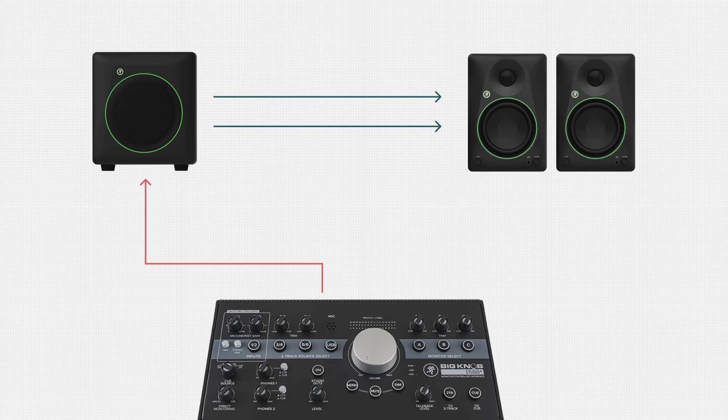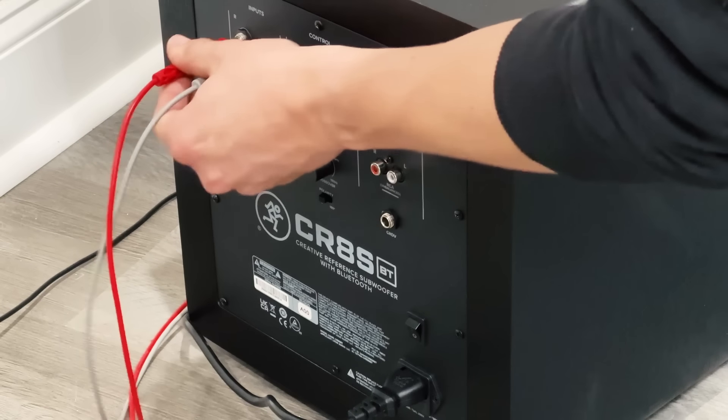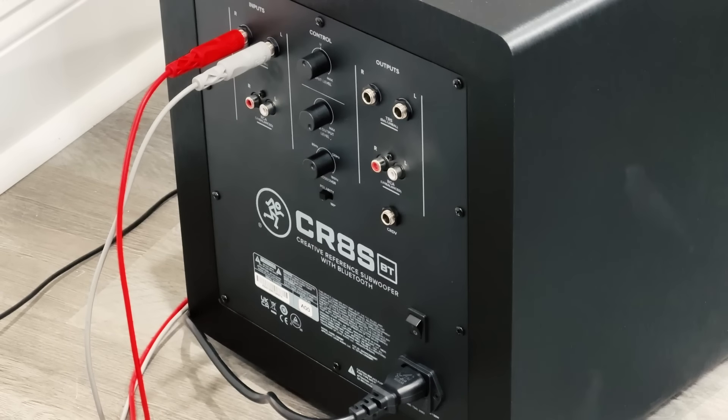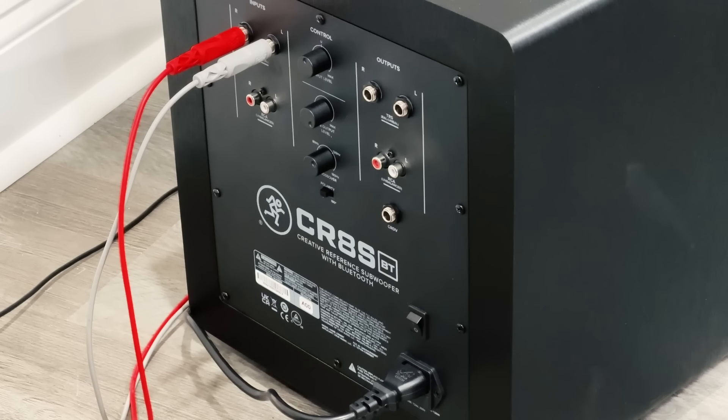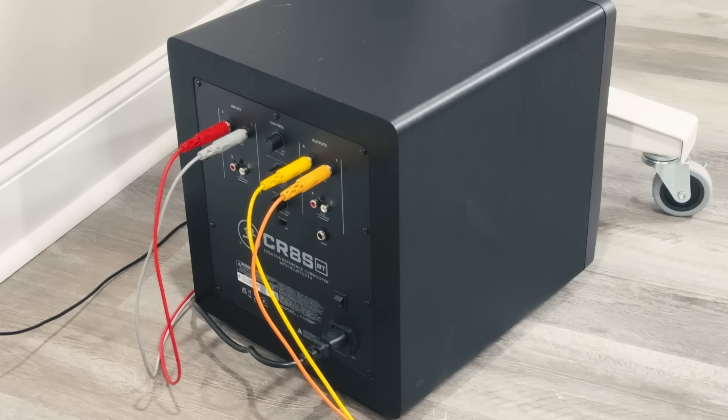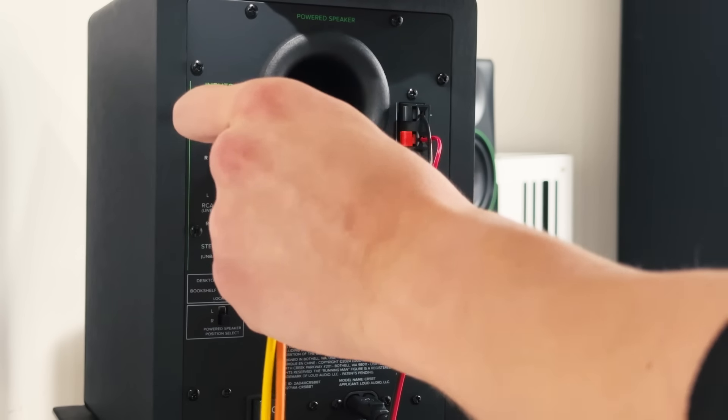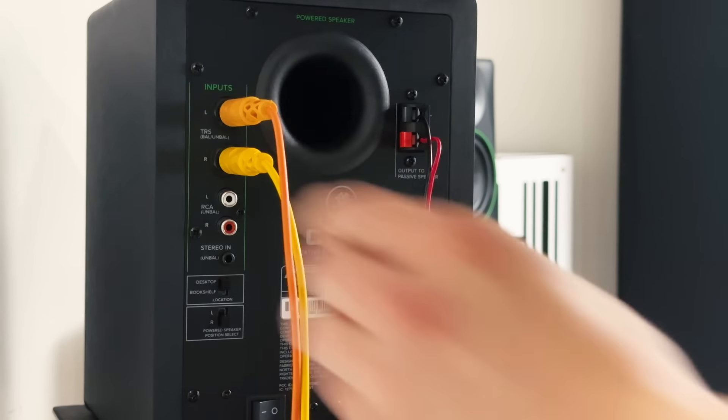Another common setup that's much simpler is what we have here with the Mackie system. In this case, the audio interface doesn't connect directly to the studio monitors. Instead, we take the left and right outputs from the audio interface, usually channels one and two, and connect them to the left and right inputs on the subwoofer. Then the subwoofer sends those same signals back out through the output connections to the studio monitors. This setup ensures the signals sent to the studio monitors will also come out of the subwoofer, with no need to do all the routing manually, plus the added benefit of a built-in crossover.